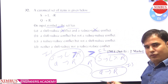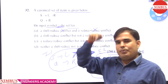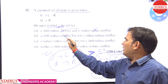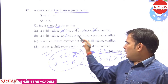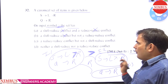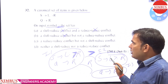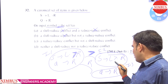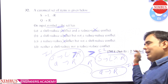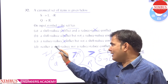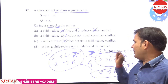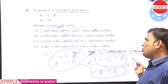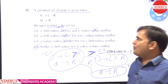As we know, there is no shift-reduce conflict — only shifting is there. Option A says shift-reduce conflict: that is wrong. Option B says reduce-reduce conflict: no production is reducing when we give '>' symbol, so that is also wrong. Option C says there is a shift-reduce conflict: there is no shift-reduce conflict, so that is also wrong. Neither a shift-reduce nor a reduce-reduce conflict. So option D is correct.